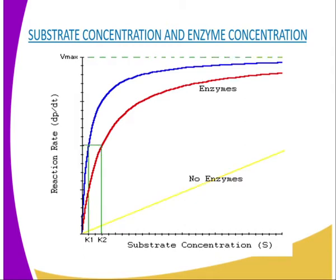We have got several factors which affect enzyme-controlled reactions, whereby the factors might include temperature and pH. But in our lesson today, we are going to first explain substrate concentration and enzyme concentration. As you can see from our diagram, when the substrate concentration is increased, the rate of an enzymatic reaction also increases up to a maximum level.